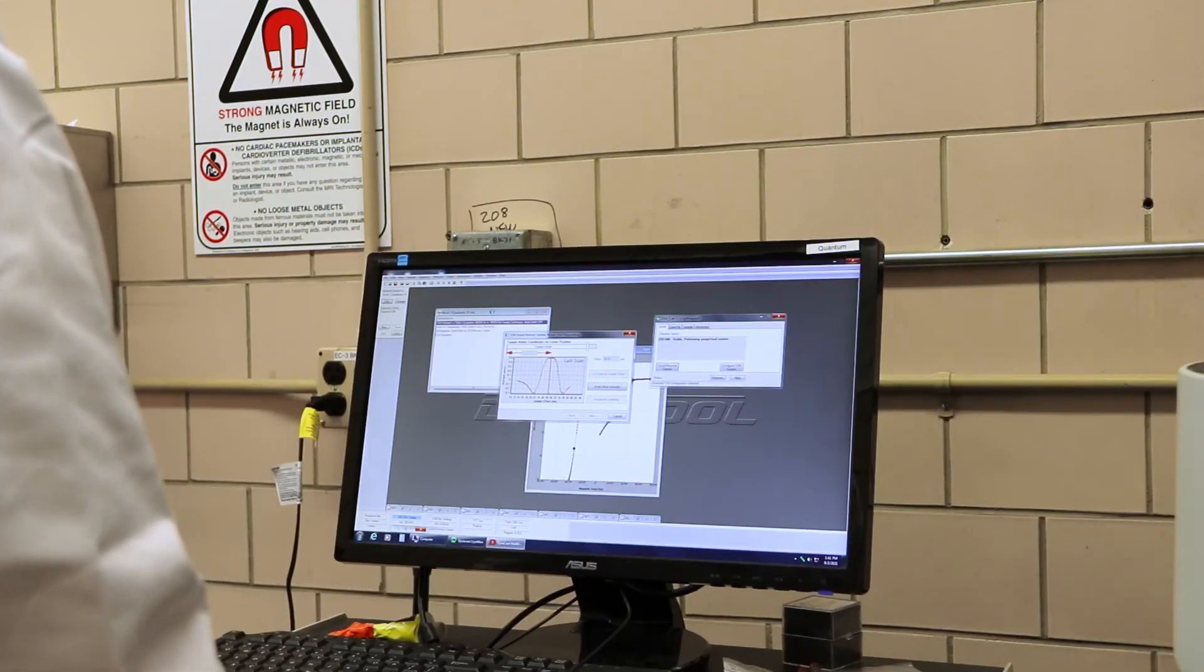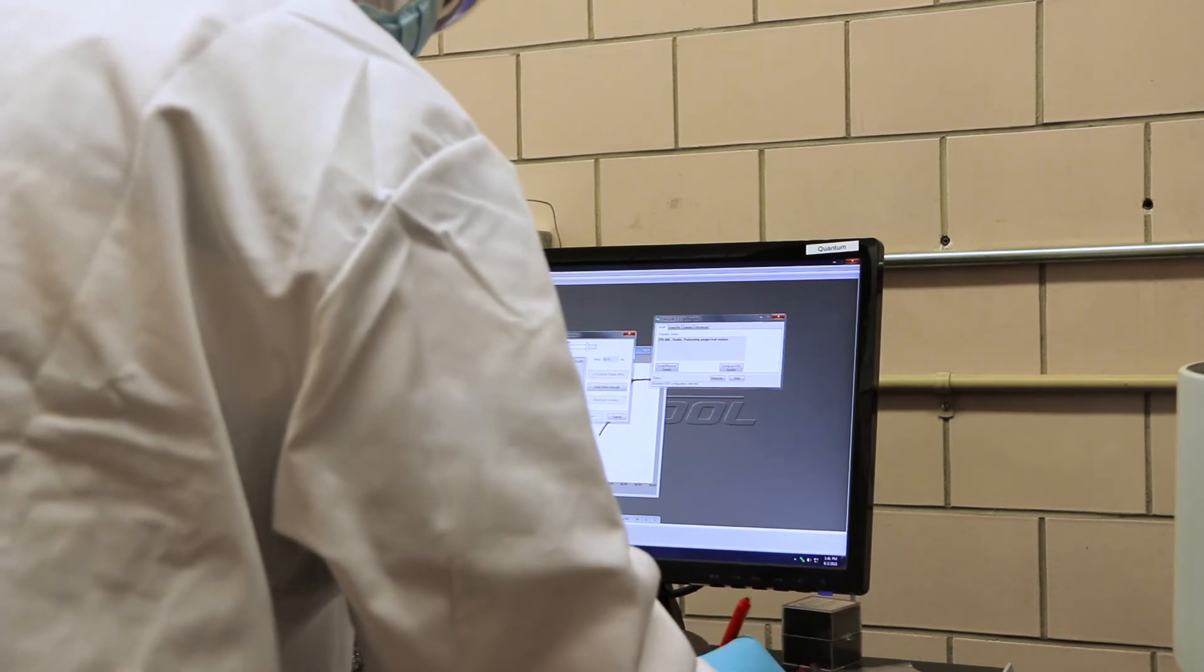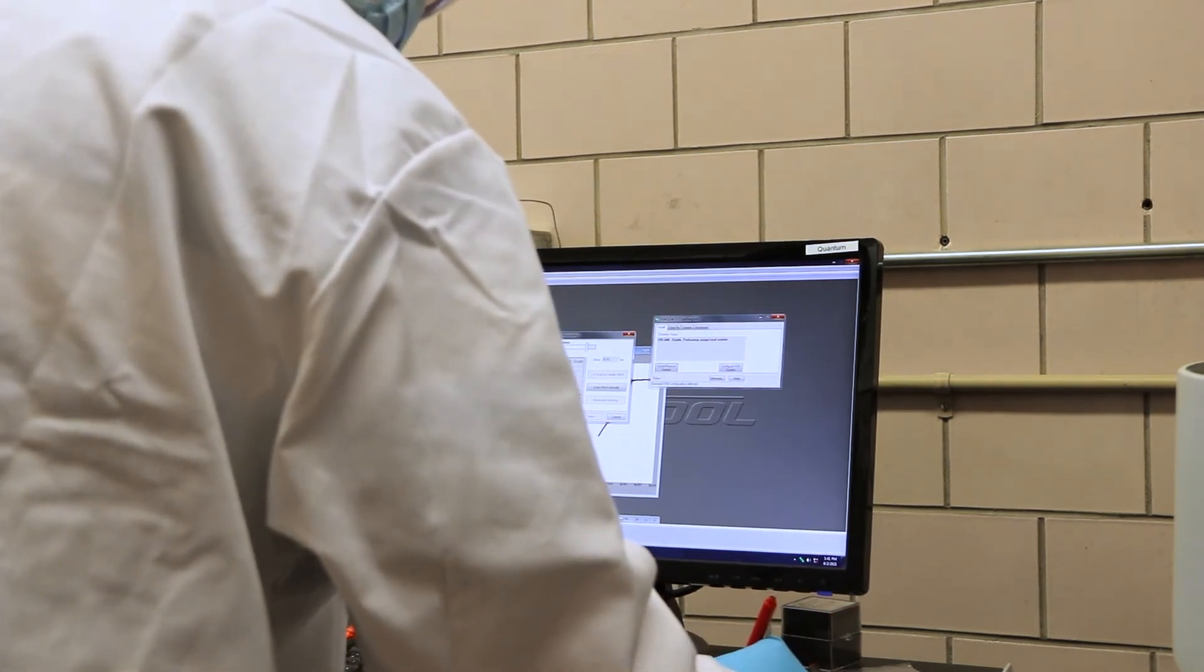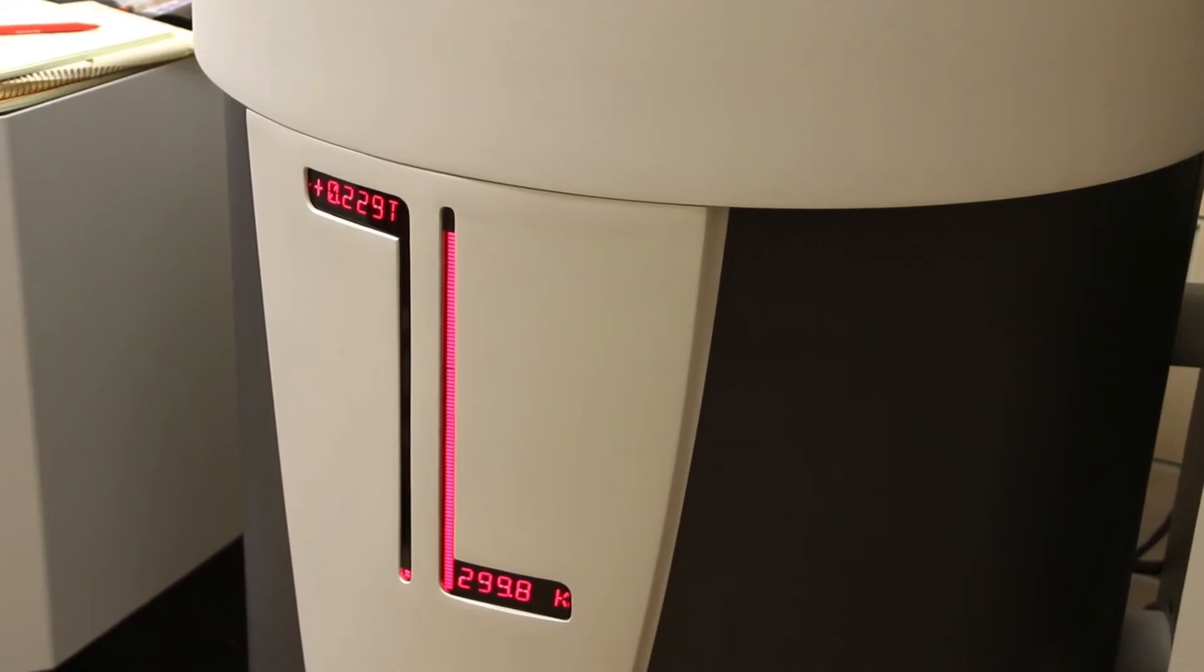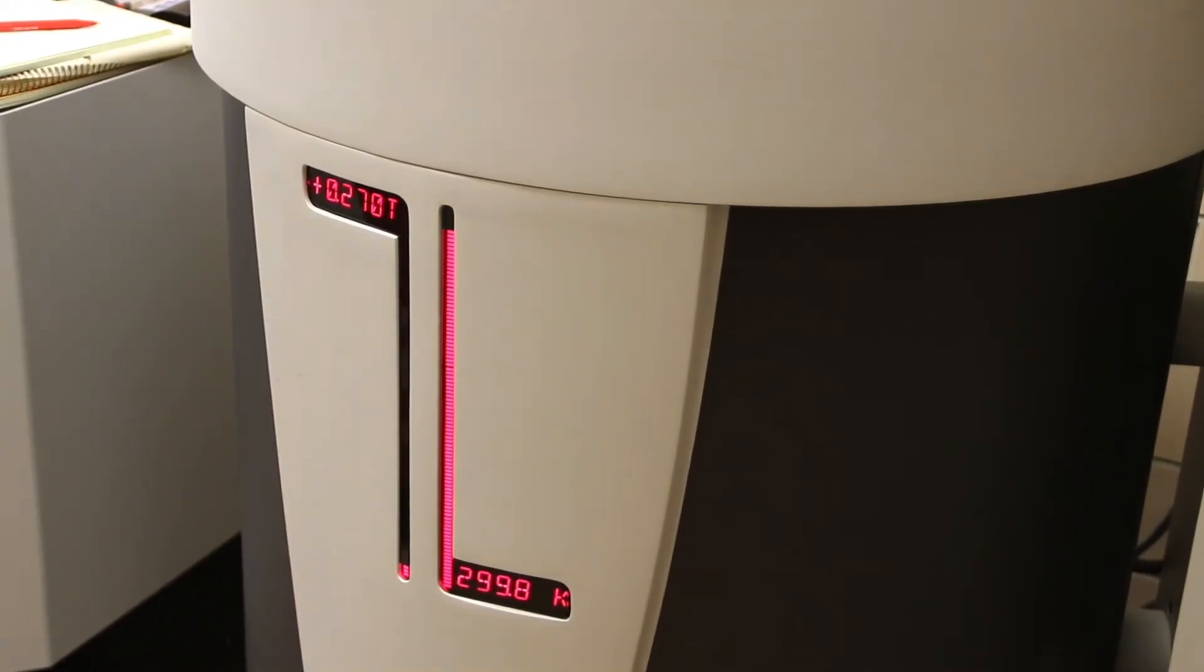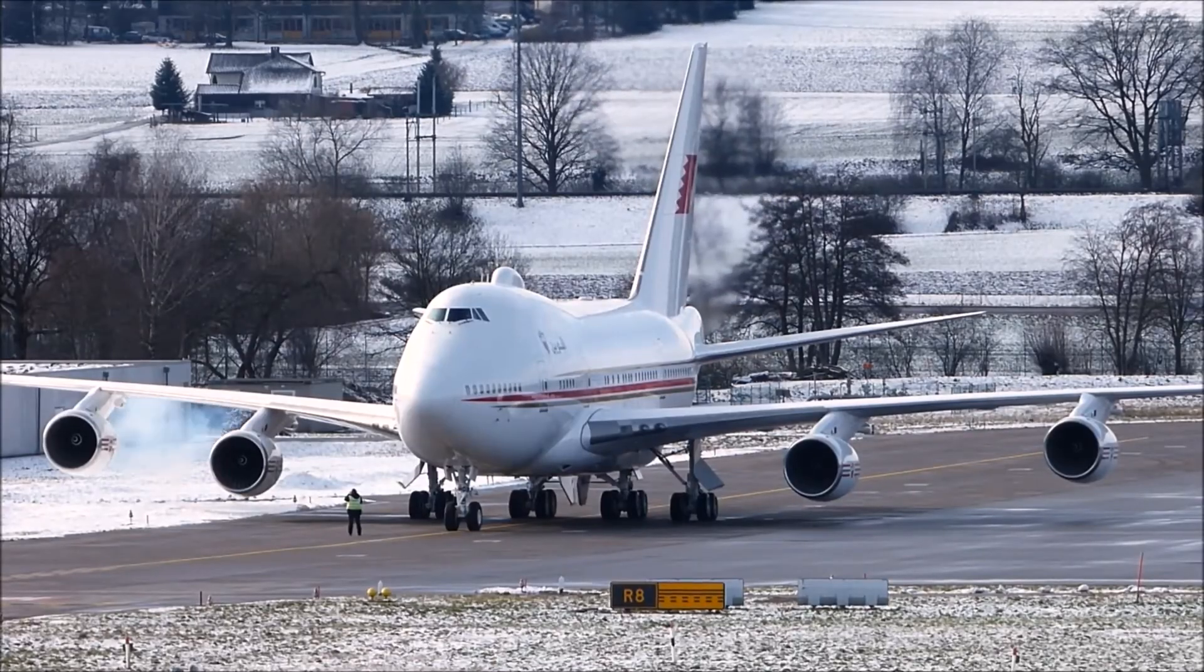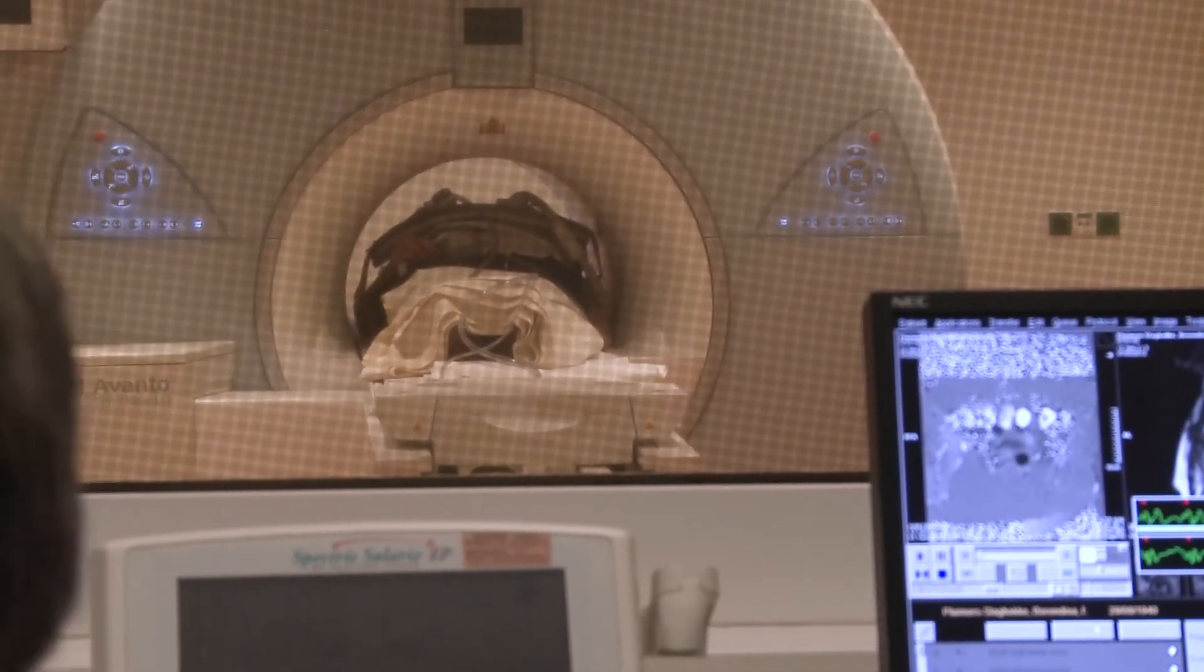Toughened samarium cobalt magnets reduce manufacturing waste, improve reliability, and they can be used in existing manufacturing machinery for use in turbines, jet engines, high-speed motors, or wherever the technology is currently being used.